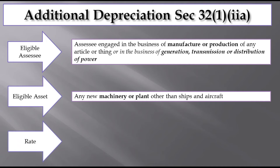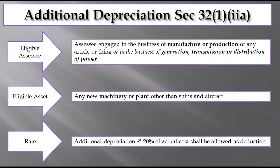This is the rate. The rate of additional depreciation is 20% of actual cost, which shall be allowed as deduction. The actual cost shall be 20% of the depreciation. Power generation and distribution companies will be eligible assets. They will be plant and machinery other than ships and aircraft. Ships and aircraft are excluded. Additional depreciation is applicable at 20% of actual cost.